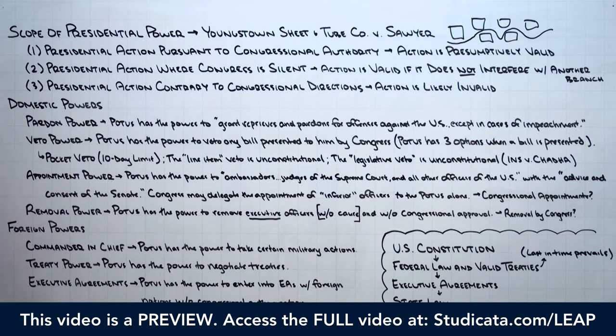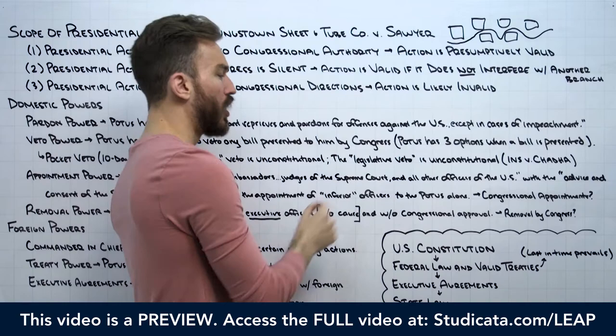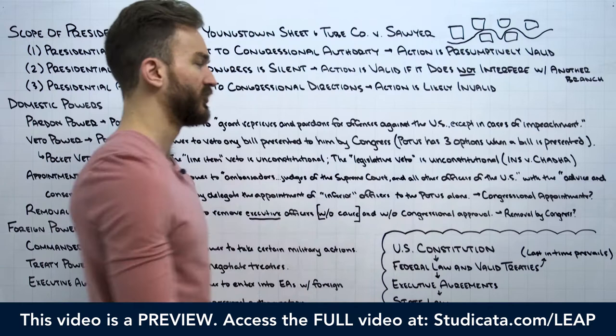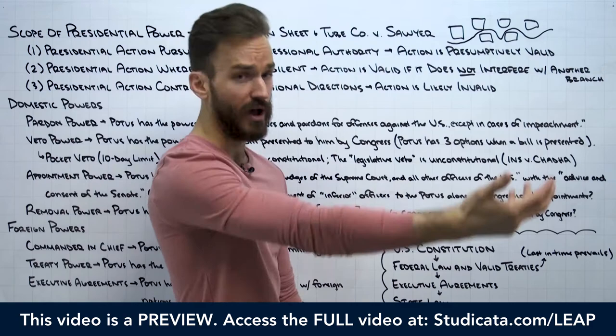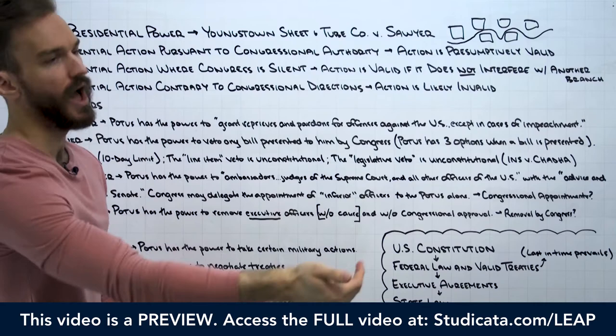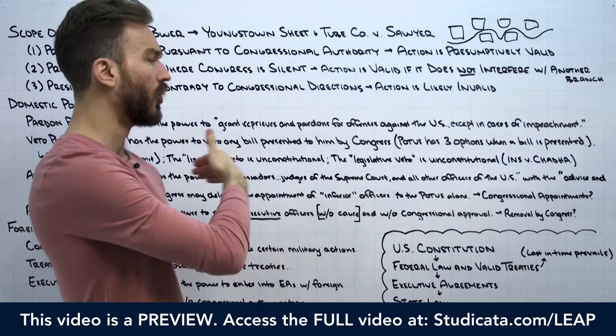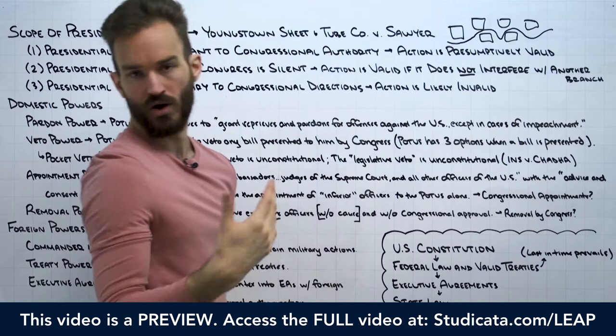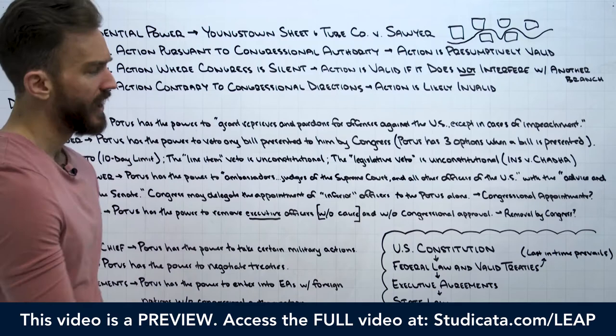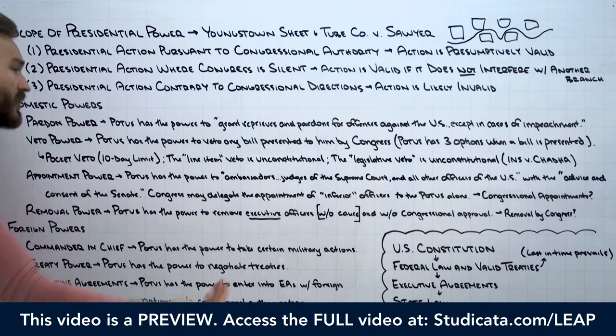Starting with domestic powers: the pardoning power. The president has the power to grant reprieves and pardons for offenses against the United States, except in cases of impeachment. We're thinking about federal crimes — the president can pardon federal crimes, not state crimes. State crimes, the pardoning power is reserved for the governor. The pardon can be conditional — there's case law on that. The main thing is it must be a federal crime. Also, this doesn't apply in cases of impeachment — the president cannot pardon officers who have been impeached.